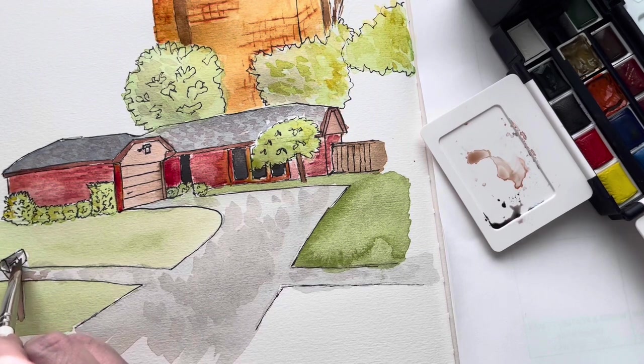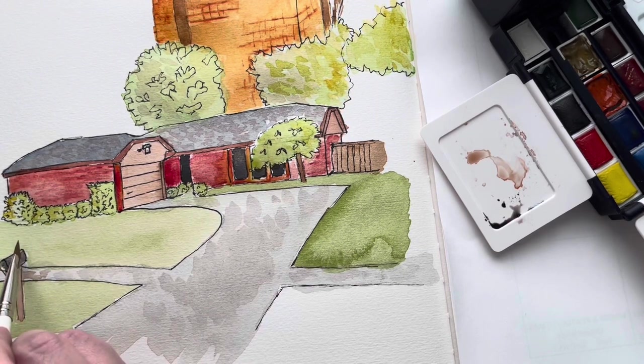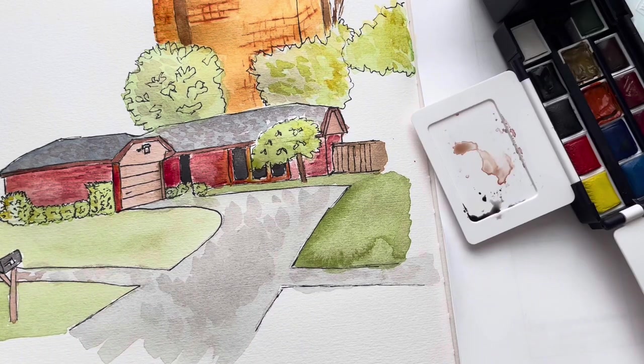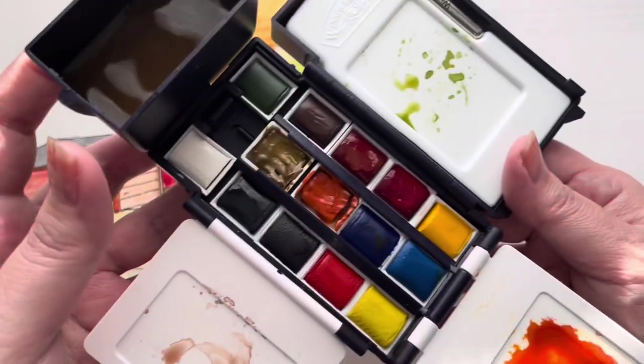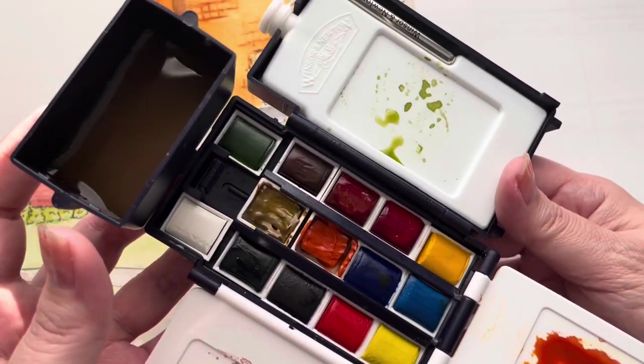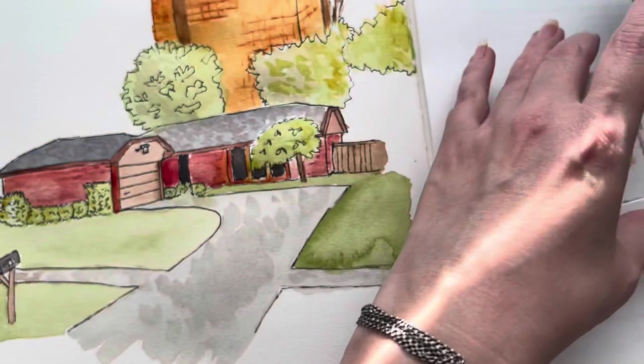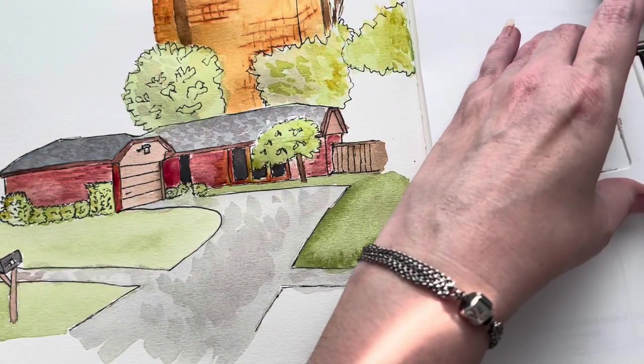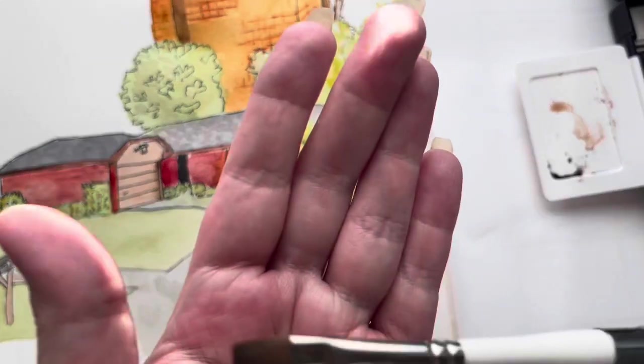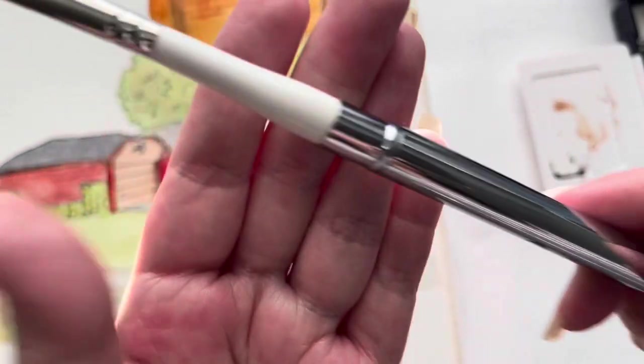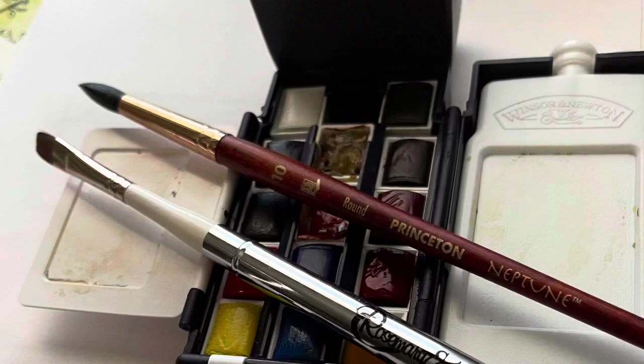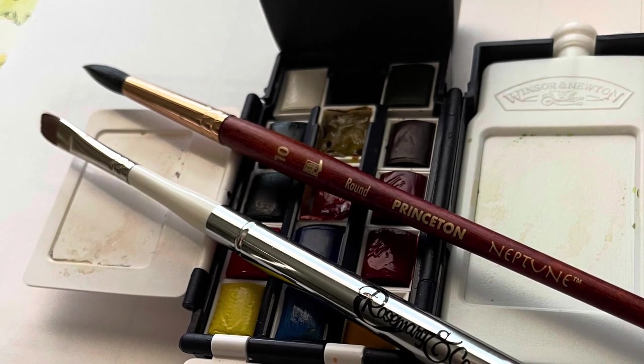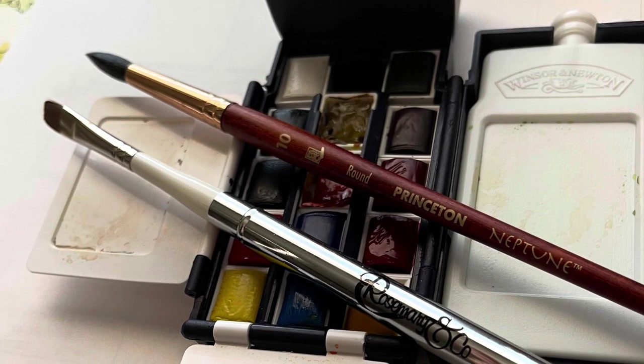Here's what my pan looks like—those are the three little mixing spaces I used, and I used the little water container as well. This is what that Rosemary and Co brush looks like. This is a great little travel brush, such a convenient size. I have a much smaller studio space now, so I really appreciate the size of this brush. And then there's that Princeton Neptune that I used as well, so I'll make sure to link all of these supplies below.